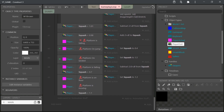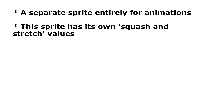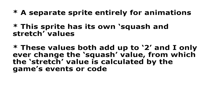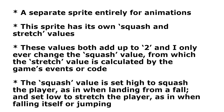The gist in important bullet points: separate sprites for collision and animation. The animation sprite has its own squash and stretch values. These values both add up to 2 and I only ever change the squash value, from which the stretch value is calculated by the game's events. The squash value is set high to squash the player — as in when landing from a fall — and low to stretch the player, as in when falling or jumping. And that's it.